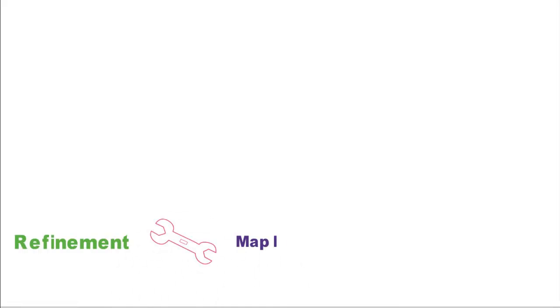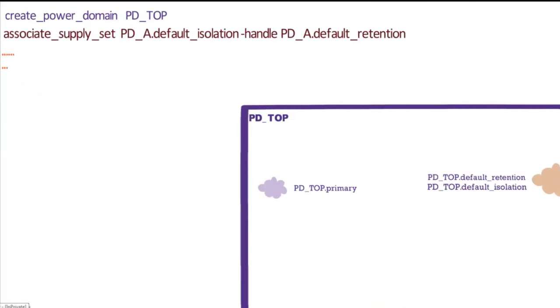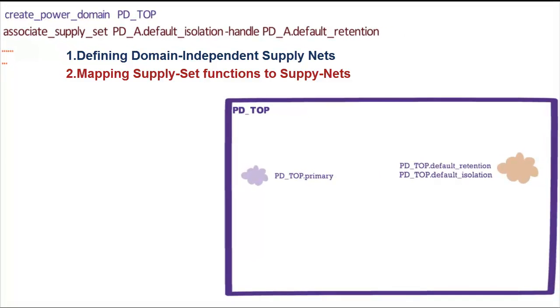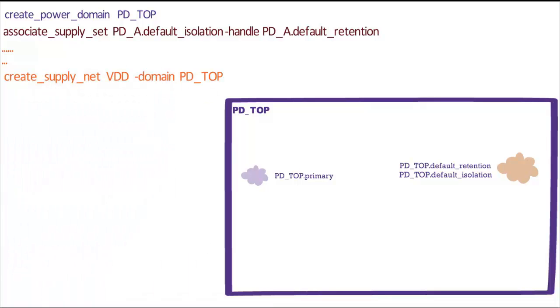Now let's talk about refinement. Before physical implementation, we have to refine the UPF, which consists of two steps: defining domain independent supply nets and mapping supply set functions to these supply nets.